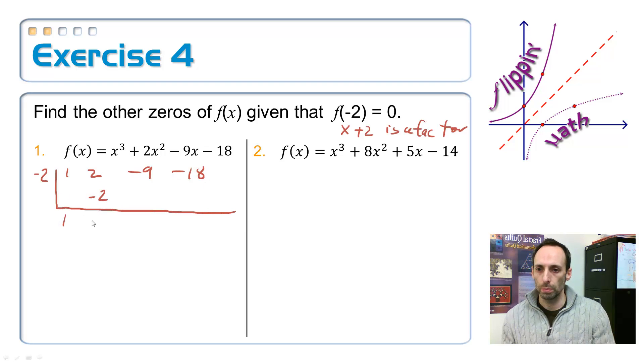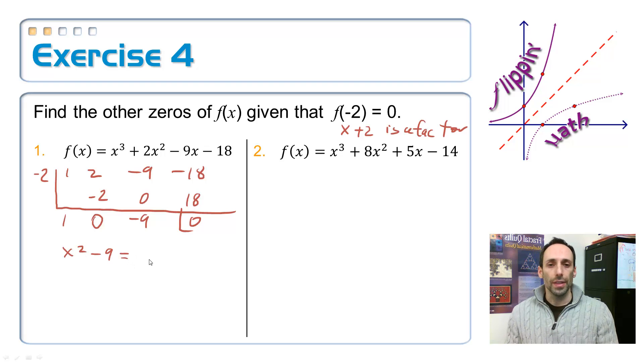1, negative 2. Bring that, 0. 0, negative 9. Multiply positive 18. There's a 0. Rewriting this one is x squared minus 9. Hey, I can easily factor that. That's the difference of two squares. x plus 3, x minus 3. Here we go.